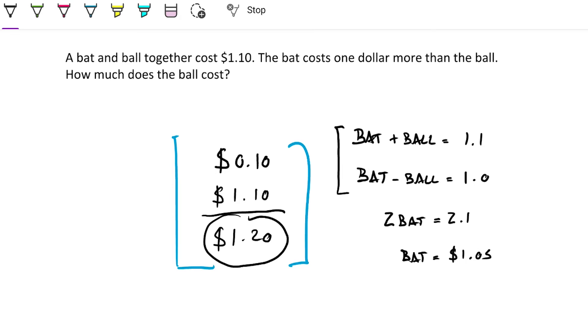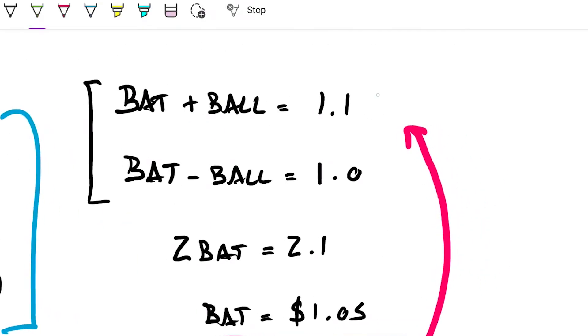And if that's the case, then we can go back here and say okay, if that's the case, then therefore the ball will be $1.10 minus whatever the bat costs.